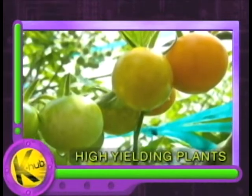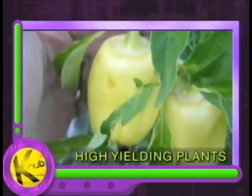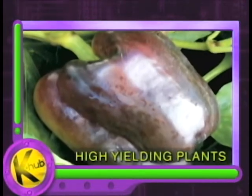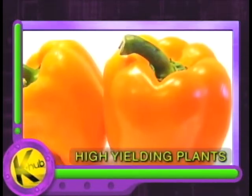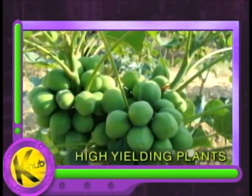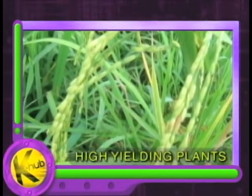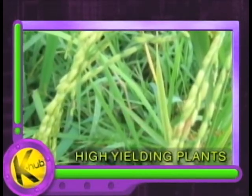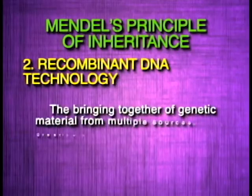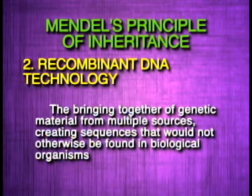It has allowed scientists to create new strains of plants that are high yielding and resistant to pests through recombinant DNA technology — the bringing together of genetic materials from multiple sources, creating sequences that would not otherwise be found in biological organisms.